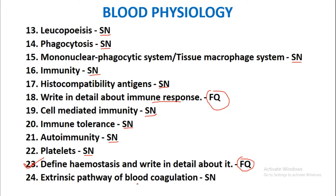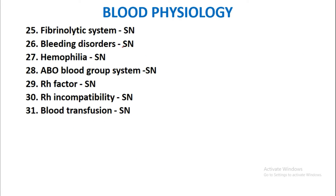Extrinsic pathway of blood coagulation as a short note. Fibrinolytic system as a short note, bleeding disorders as a short note. Hemophilia — one type of bleeding disorder — is also individually asked as a short note.